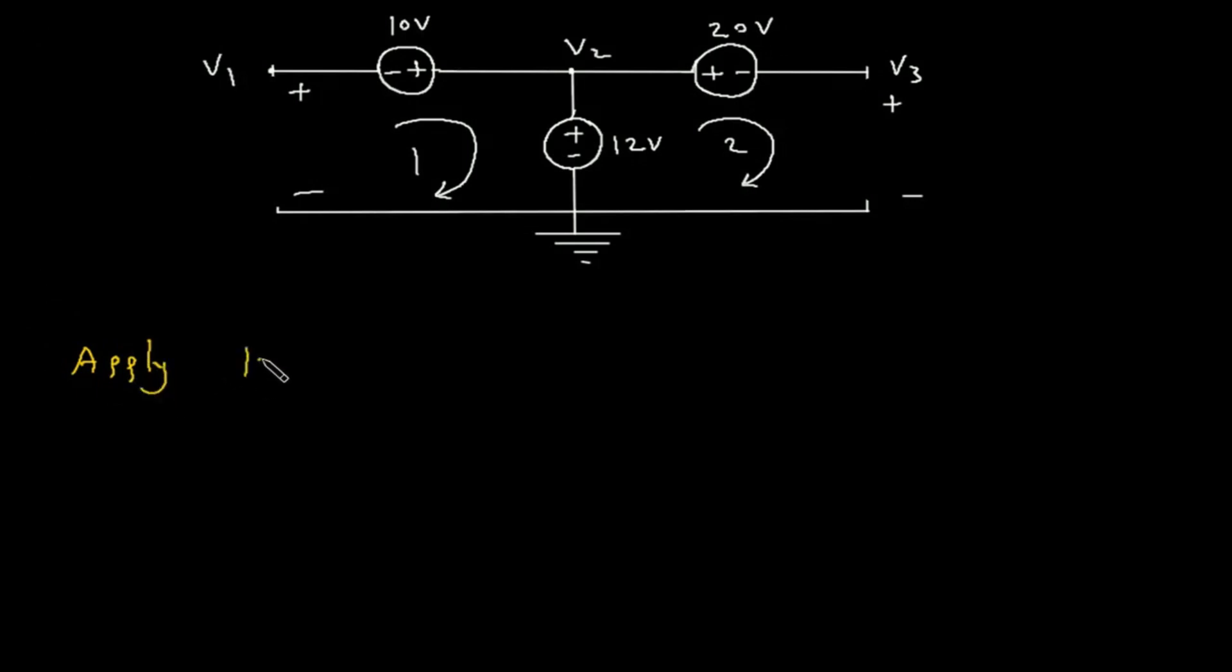Apply KVL to loop 1. Let's say we will start from this point. So, this will be minus V1.